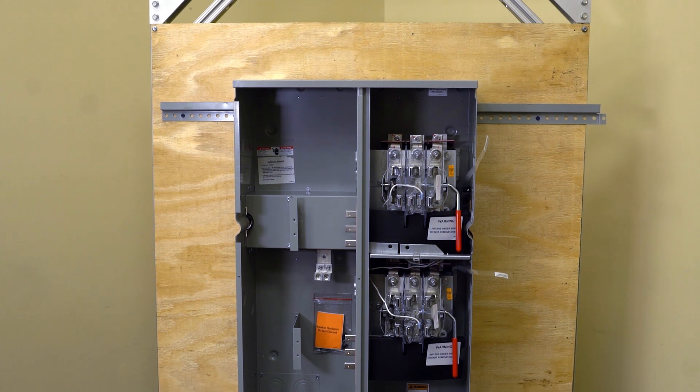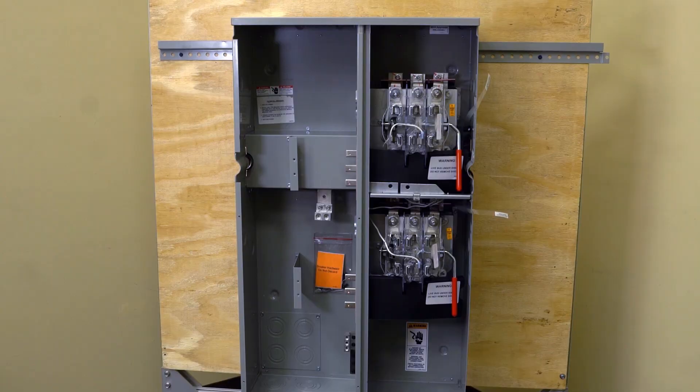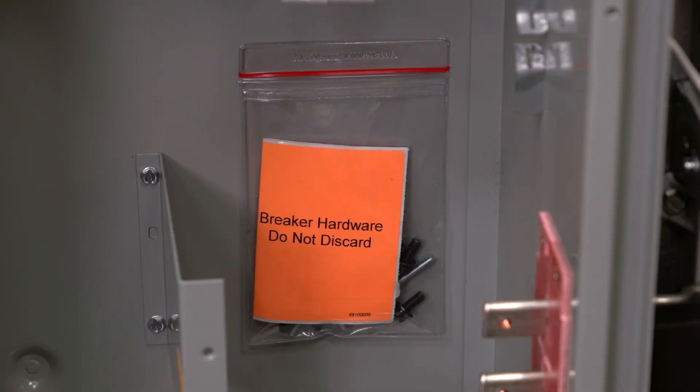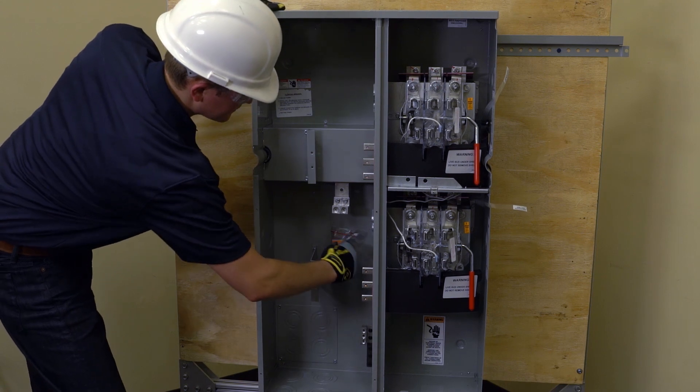When installing three phase in, three phase out stacks, one of the most important things to be aware of is that all of the mounting hardware for the breaker is located in the components bag along the back wall of the unit. It is crucial not to throw this bag away until you are certain the contents are not needed. Be sure to remove the components bag from the enclosure prior to energizing.